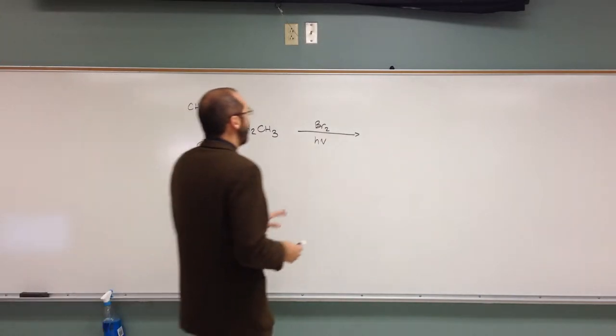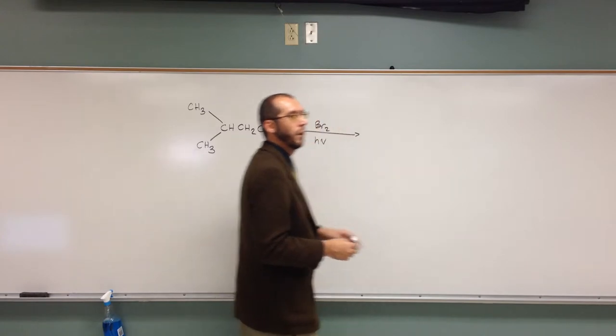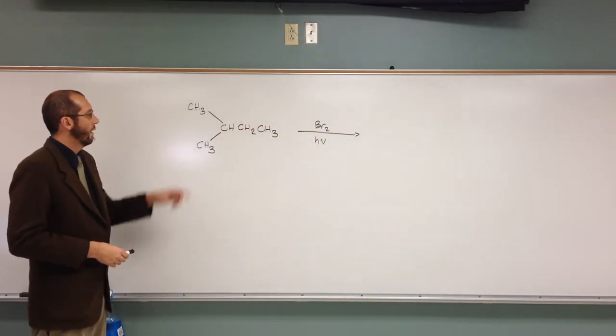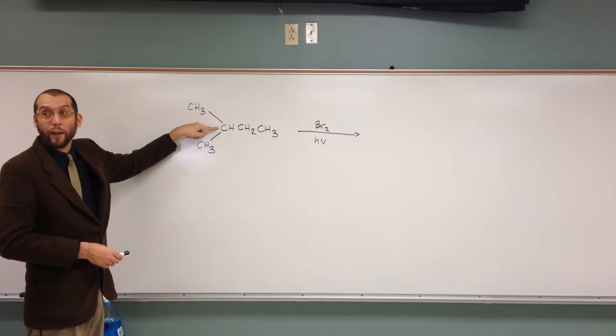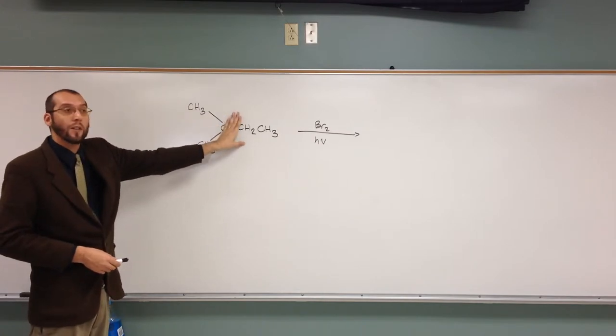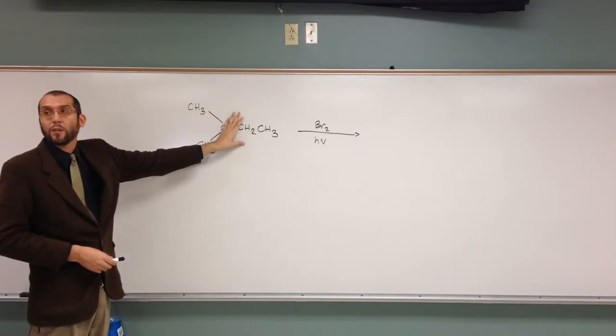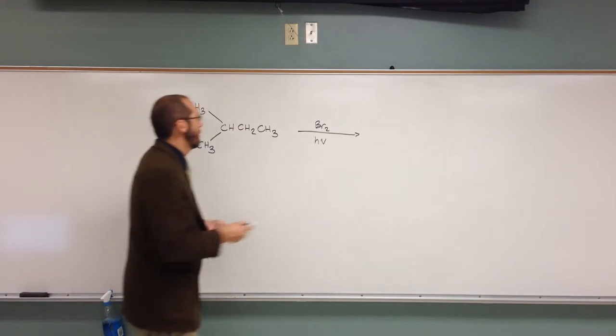So when we write the product, where are we going to put the bromine? On this carbon here, right? So what we're going to do is actually take that hydrogen away and substitute it for a bromine. That's what's going to happen.